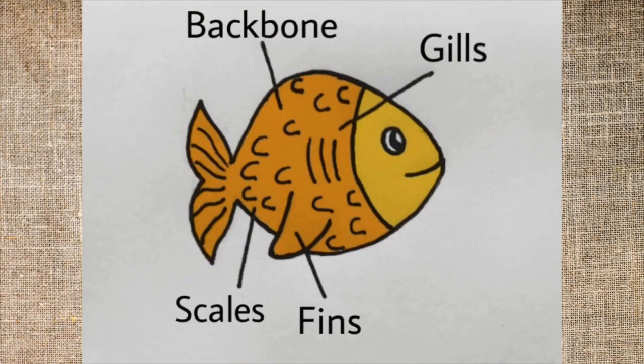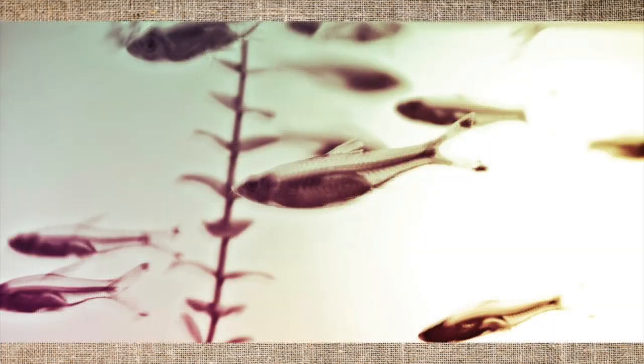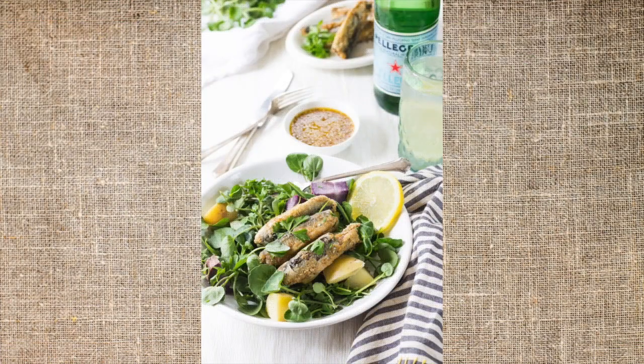Fish are cold-blooded, with fins, gills, scales, and a backbone. They also lay eggs. While fish have no gender-specific terminology, baby fish are called fry. Fish can be used for food, oil, etc.